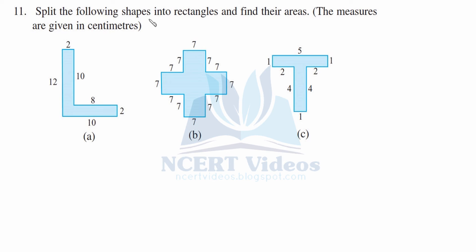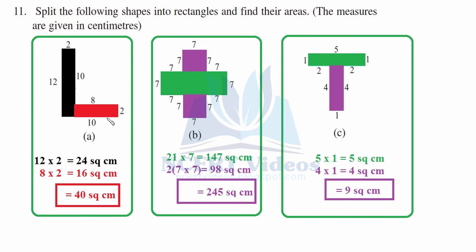Eleventh question: split the following shapes into rectangles and find their areas. All measures are in centimeters. For the first part: green portion 12 into 2 is 24 square centimeter; red portion 8 into 2 is 16 square centimeter. Adding 24 plus 16 gives 40 square centimeter. For the second part: green portion 21 into 7 is 147 square centimeter.